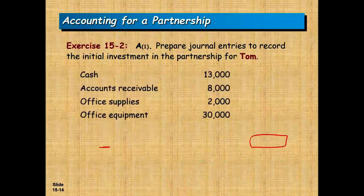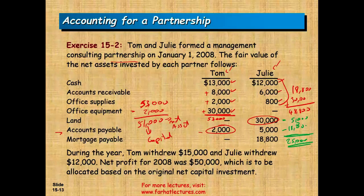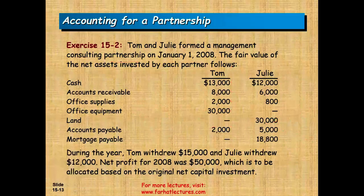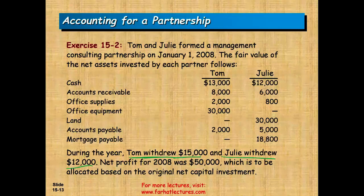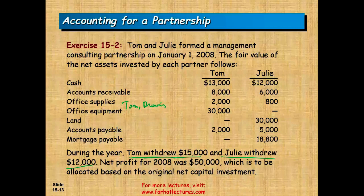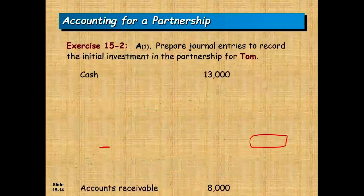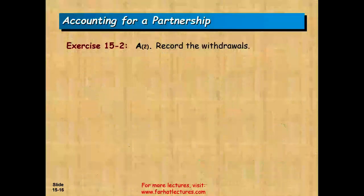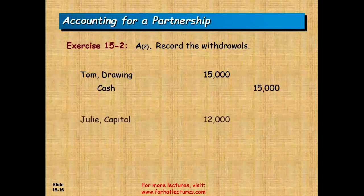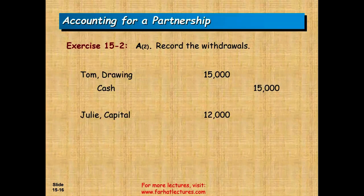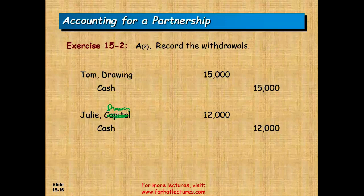During the year, Tom withdrew $15,000 and Julie withdrew $12,000. For a withdrawal, we use the drawing account. For Tom: debit Tom Drawing $15,000, credit Cash $15,000. For Julie: debit Julie Drawing $12,000, credit Cash $12,000.